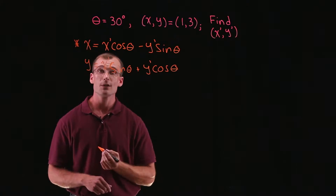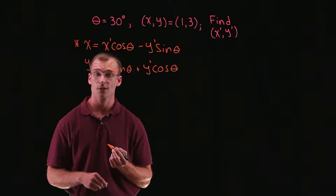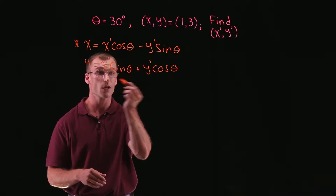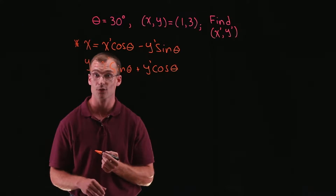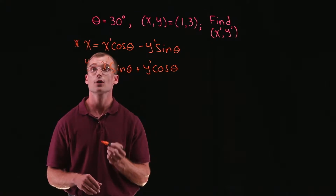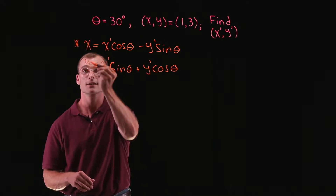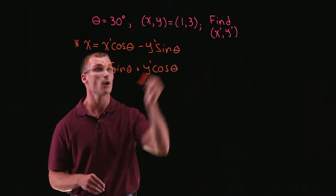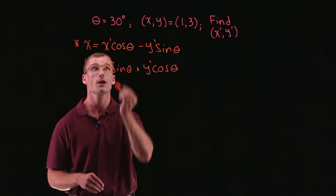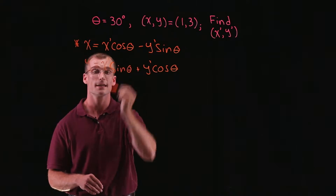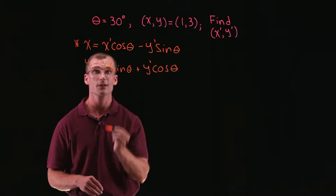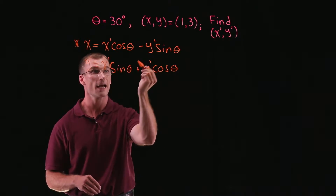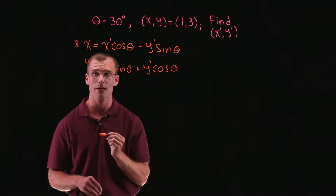Now, the most straightforward way is to plug in what we have and then see what we can solve for. We know what x and y are — that's from the point 1 and 3 — and we also know what theta is. So we can find x prime and y prime.